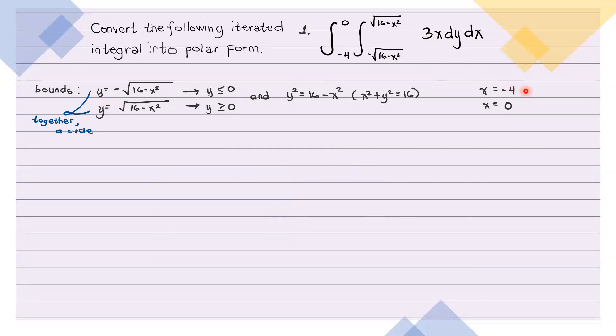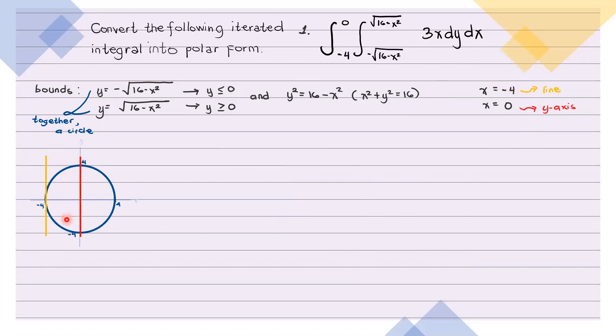So x equals negative 4 naman, this is a line, and x equals 0 is the y-axis. So sketching these curves, we have the circle with center (0,0) and radius 4. And then yung line na x equals negative 4 at yung y-axis. So ano yung region na nababound? Itong region na ito — kalahati lang nung circle. So we have the following.